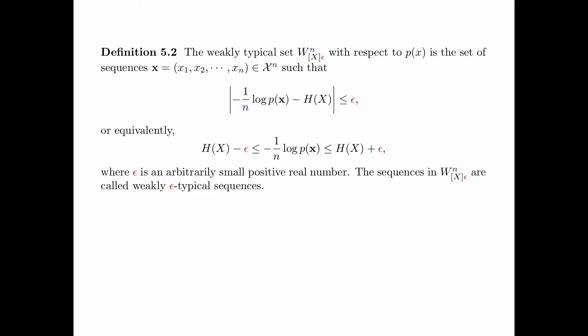We now define the weakly typical set, which has two parameters: n, a positive integer, and epsilon, a small positive quantity. For clarity, we mark all n's in blue and all epsilons in red. The weakly typical set W sub x,epsilon sub n with respect to px, a distribution on the alphabet script x, is the set of sequences x equals x1, x2, up to xn in script x to the power n, such that the absolute value of minus 1 over n log p(x) minus entropy of x is less than or equal to epsilon. Equivalently, minus 1 over n log p(x) is between entropy of x minus epsilon and entropy of x plus epsilon. The sequences in the typical set are called weakly epsilon-typical sequences.